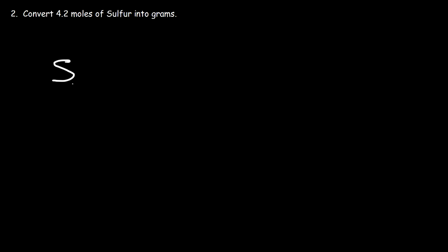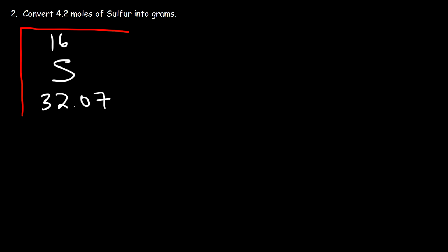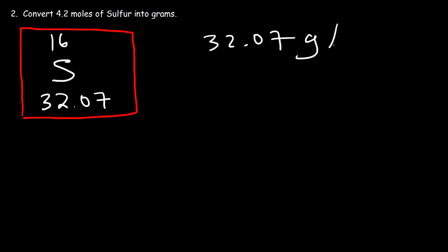Number 2: convert 4.2 moles of sulfur into grams. Based on our last example, feel free to pause the video and try this one. First, look for sulfur in the periodic table. Sulfur has an atomic number of 16 and a mass number of 32.07 — that's the average atomic mass. So the molar mass of sulfur is 32.07 grams per mole.